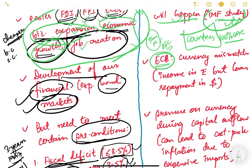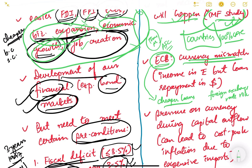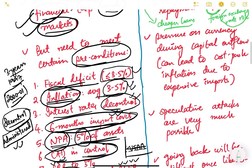External commercial borrowing is a two-sided sword. On one hand you get cheaper loans due to lower interest rates abroad, but on the other hand there is foreign exchange rate risk — known as currency mismatch. An Indian company repays its loan in dollars but earns in rupees. If the rupee depreciates against the dollar, the company must pay more rupees to repay that dollar-denominated loan.